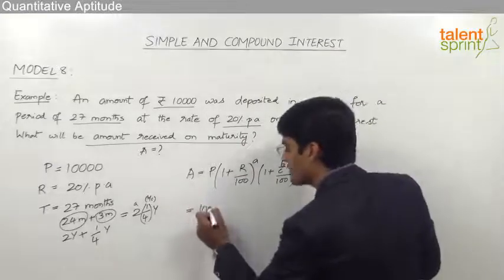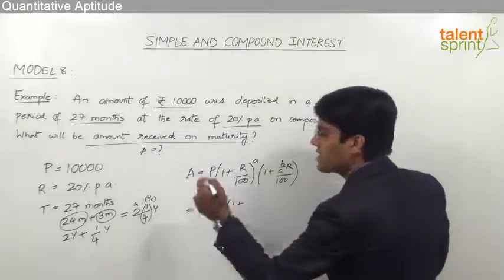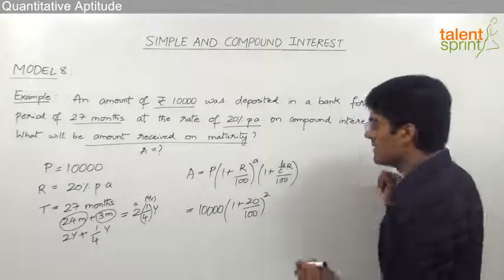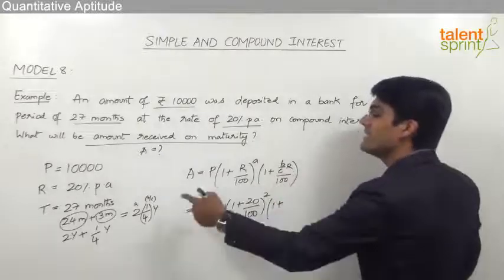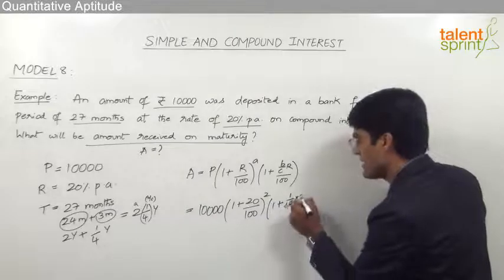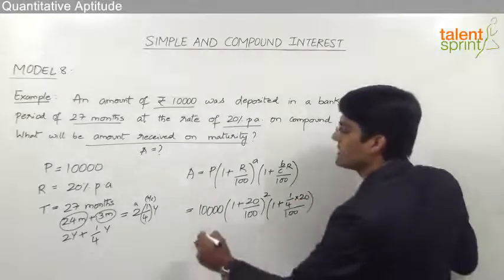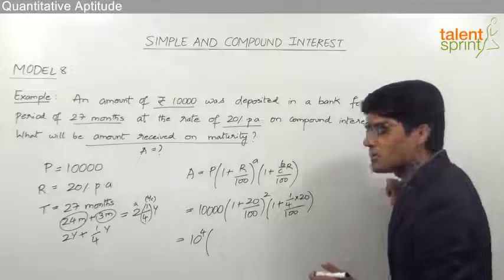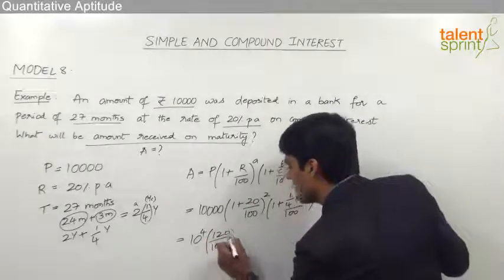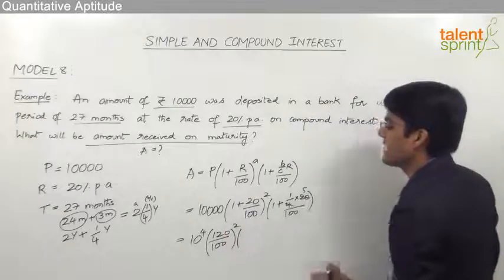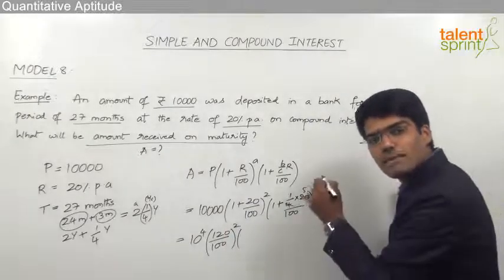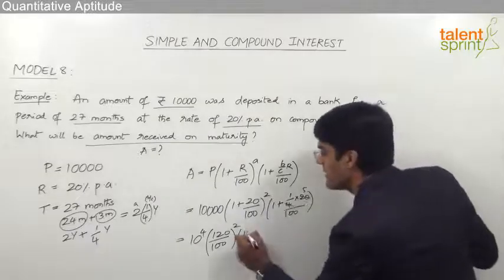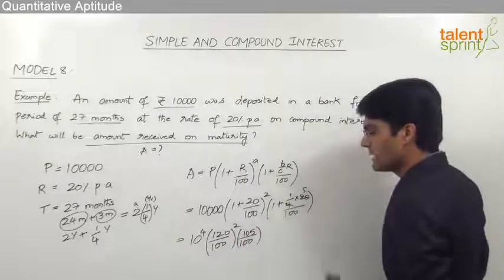Amount = 10,000 × (1 + 20/100)^2 × (1 + (1/4) × 20/100). This simplifies to 10,000 × (120/100)^2 × (1 + 5/100). The 4 cancels with 20 to give 5/100, and 1 + 5/100 = 105/100. So we have 10,000 × (120/100)^2 × (105/100).